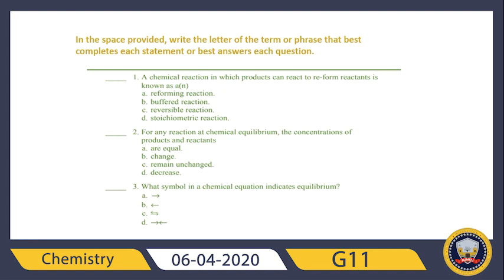Question number three: what symbol in a chemical equation indicates equilibrium? The answer is again C — two arrows pointing in opposite directions. So far all answers have been C.